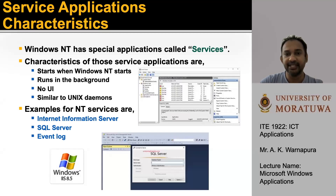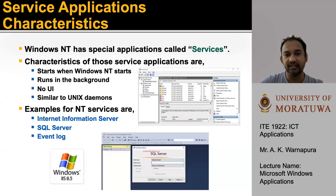Service Application Characteristics: Windows NT has special applications called Services. These applications start when Windows NT starts and run in the background. They do not have any user interface, similar to Unix daemon processes. Examples of NT services are Internet Information Server, SQL Server, and Event Log.